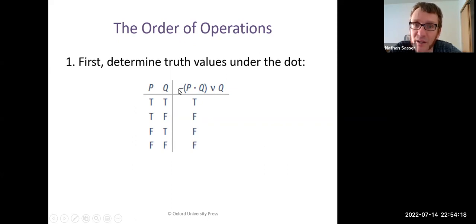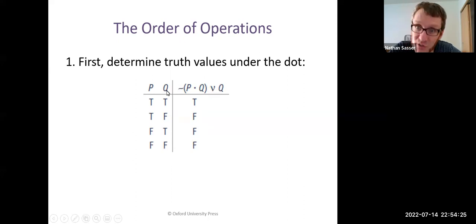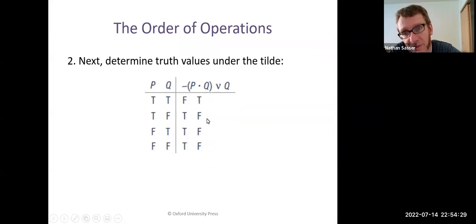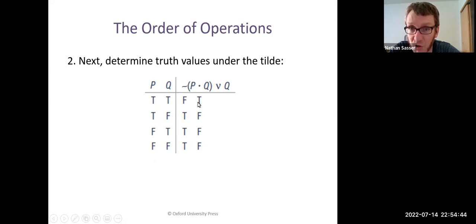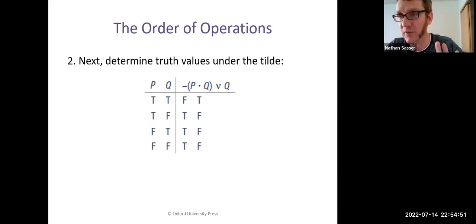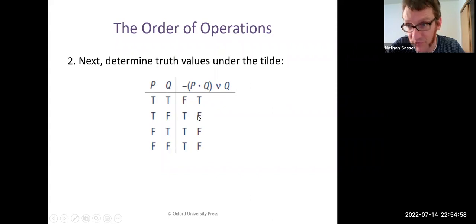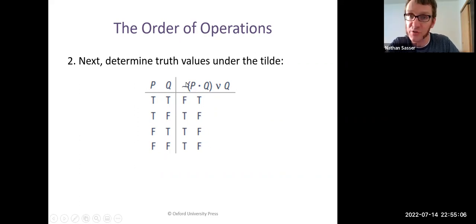Why do we do the tilde before the wedge? Because we don't know the truth value of the whole compound statement yet, so we can't determine the wedge that ranges over it. This negation says: it's not the case that the stuff in parentheses. So if the conjunction on line one is true, then the negation of it is false. If the stuff in parentheses is false — like on line two — then the negation is true, and so forth on lines three and four. Now we have the truth values for the entire compound statement: not the case that P and Q.